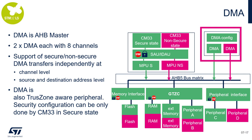TrustZone architecture allows easy integration of other bus masters such as the DMA. The DMA is capable of generating secure or non-secure bus transactions based on the security configuration. This can be done at the level of individual DMA channels and also at the level of source and destination address for one particular channel. The security configuration is performed through the DMA slave port and is typically done by the secure application during the initialization phase.